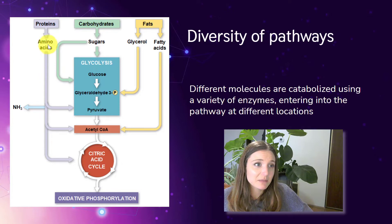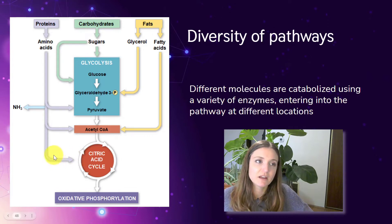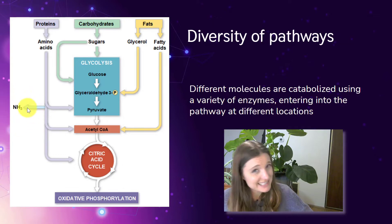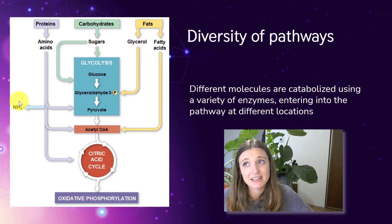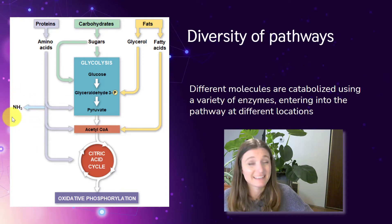Proteins, depending on the amino acid, can enter in at different places. We can convert them into pyruvate, we can convert them into acetyl-CoA, or we can convert them into the citric acid cycle. What's different about proteins is that one of the waste products is NH3. So nitrogenous waste can be especially difficult to deal with, and a diet high in proteins can produce a lot of nitrogenous waste, which can be harmful to the cells.